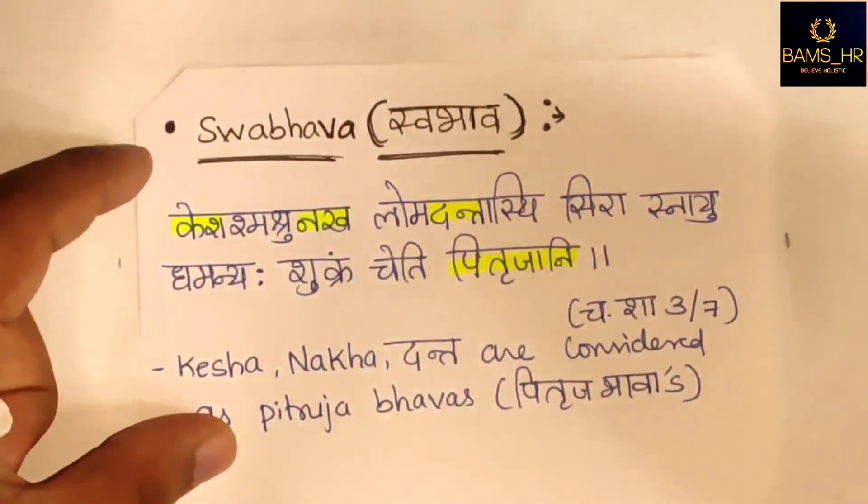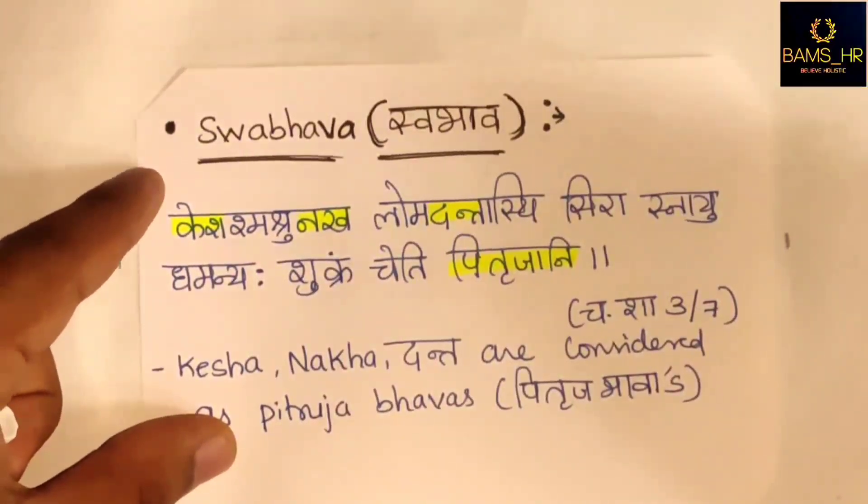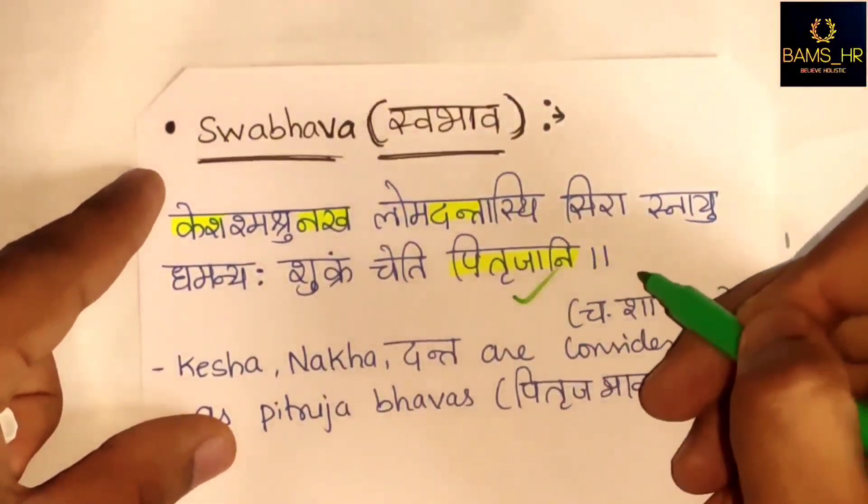Now, Sobhava: Kesha, Shmashu, Nakha, Loma, Danta, Asthi, Srirasana, Ayuhu, Dhamanyaha, Shukram - these are considered Pitruja Bhava, meaning they all originate from the Pitruja Bhava.